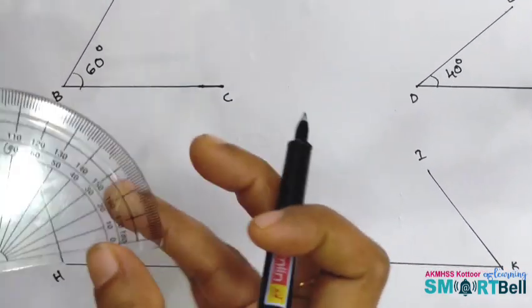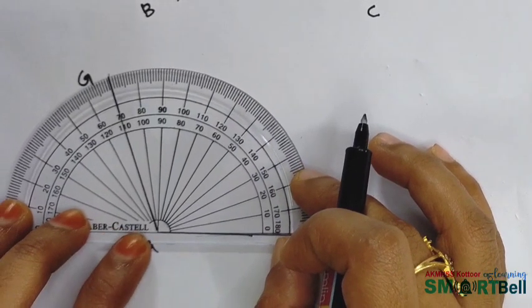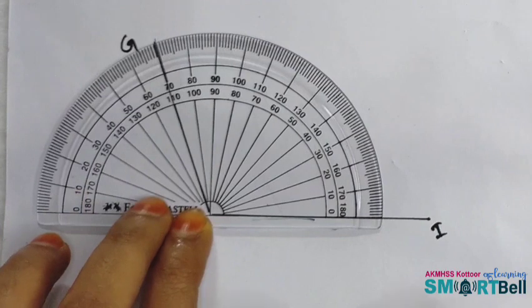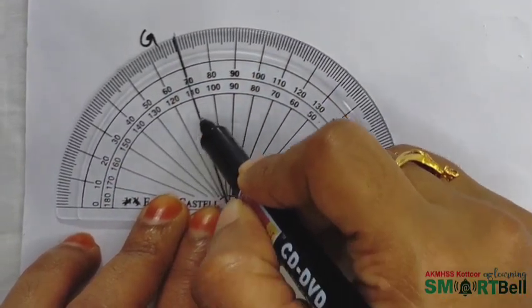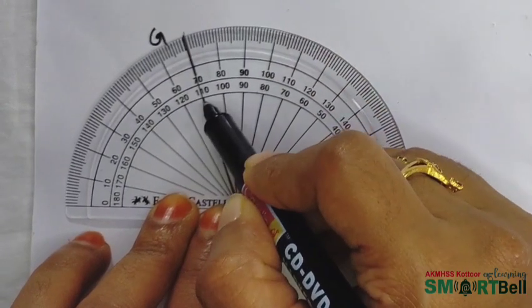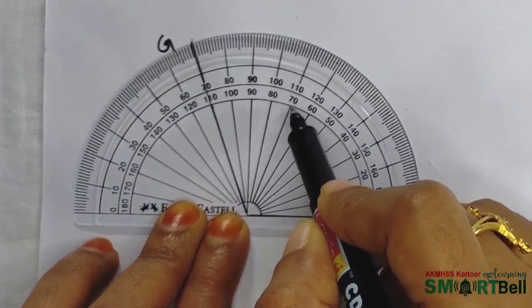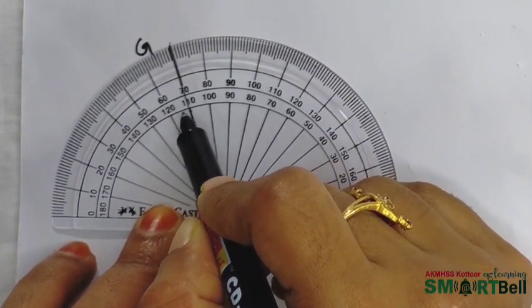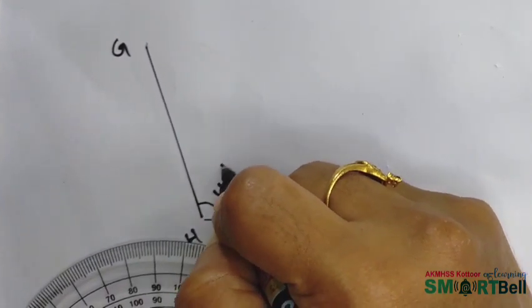And the third one. We need to place the center point of the protractor here. Keep the base along with the side. And please look at this. The line passes through the number 110: 0, 10, 20, 30, 40, 50, 60, 70, 80, 90, 100 and 110. So, the angle is 110 degrees.